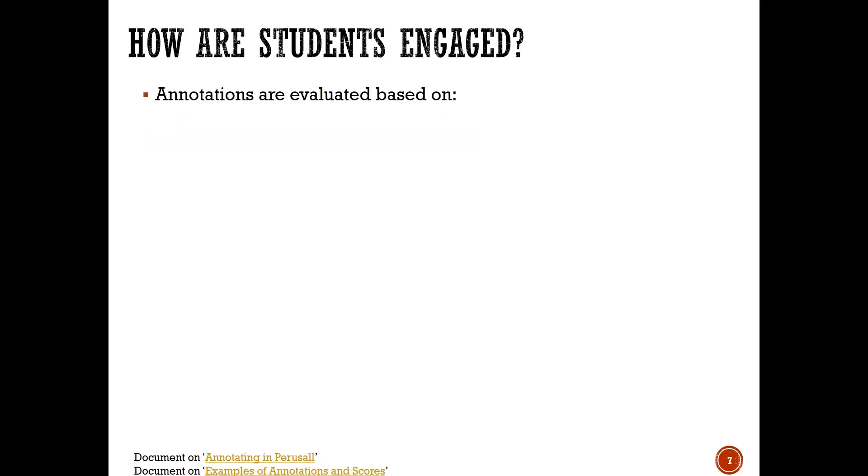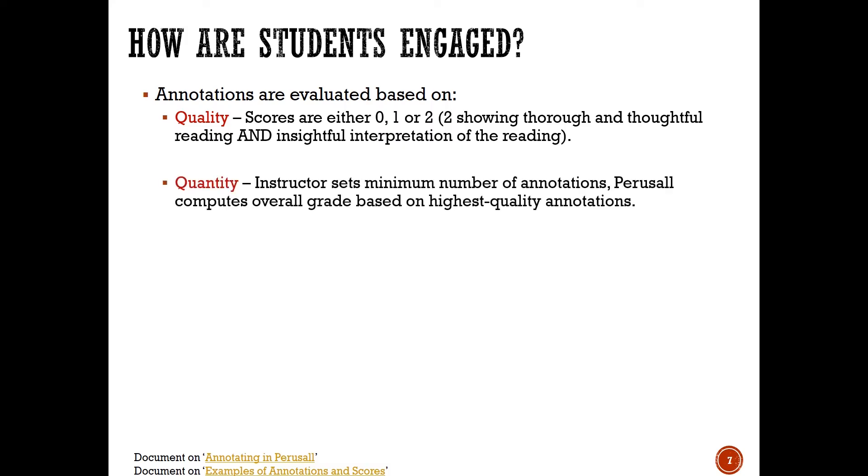The overall grade for each reading assignment is based on four criteria: the quality of the annotations—the more thoughtful their annotations, the higher the scores. It's also based on how many annotations they make and whether they meet the minimum number required by the instructor. Did they complete the assignment in time? And lastly, where were the annotations made? If all of them were made in only one part of the document, then it suggests the students didn't actually read the entire document.